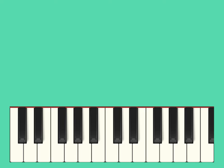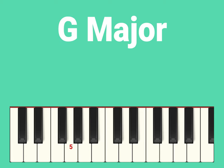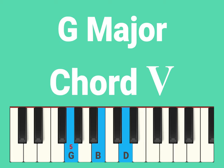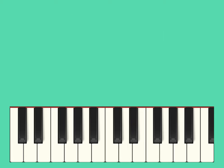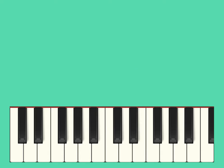Next we get F major, chord four, followed by G major, chord five. The next letter up, A, gives us A minor for chord six.